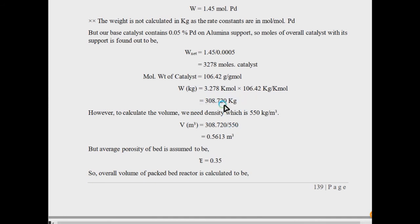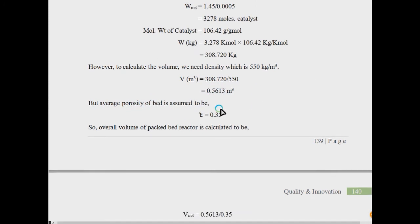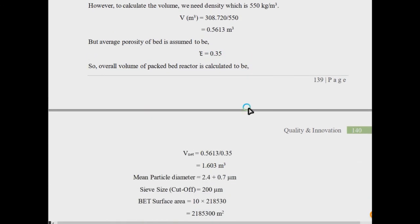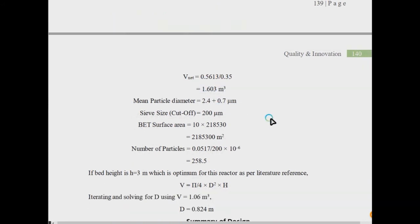Now we can calculate the volume of catalyst because it has a packed bed and there will be porosity. The volume comes out based on density 550 kg/m³, volume is mass over density equals 0.5613 m³. The average bed porosity is always there in a packed bed. Dividing that porosity, total volume will be 1.603 m³ or 1603 liter.